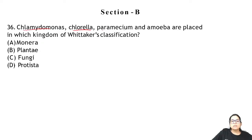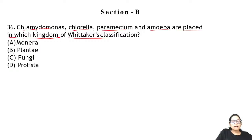Question 36: Chlamydomonas, Chlorella, Paramecium, and Amoeba — in which kingdom are they placed in Whittaker's classification? The answer is Protista.